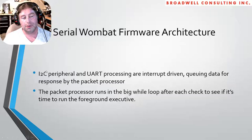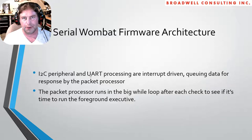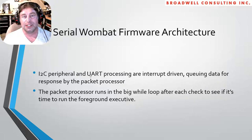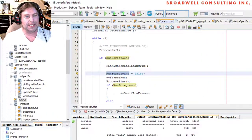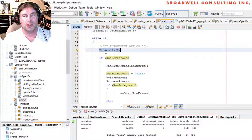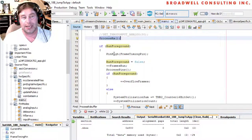The I²C peripheral and UART processing are interrupt-driven. A byte comes into the UART or gets clocked into the I²C, an interrupt fires and puts it into a queue — a data buffer. When eight bytes are accumulated on the UART, or when an I²C packet is complete with eight bytes in it, then the main executive processes those bytes. Every time we go through the while(1), we're doing processRx, which looks at those buffers from the interrupts and determines if a new packet came in and what to do with it.